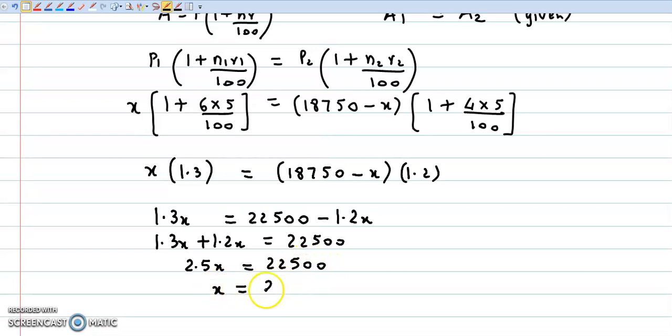Here we will get x's value as 22,500 divided by 2.5. If we divide it, we get the answer as 9,000. So the first son will get principle 9,000 and the second son will get 18,750 minus 9,000. If we subtract, 18,750 less 9,000, we get 9,750.